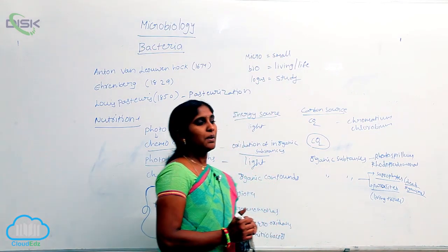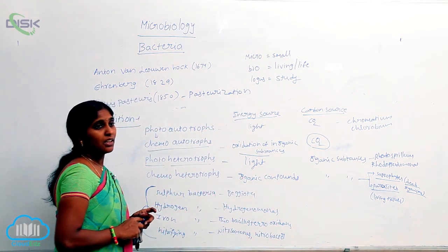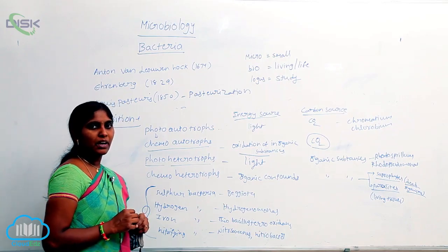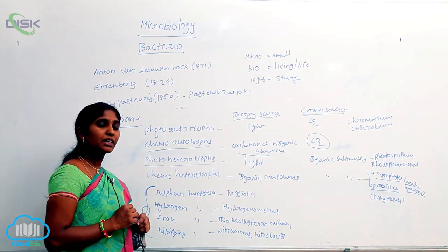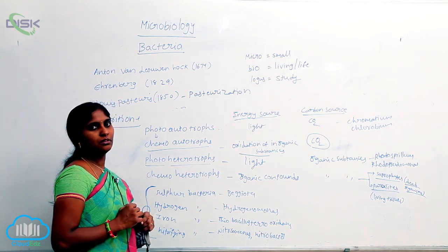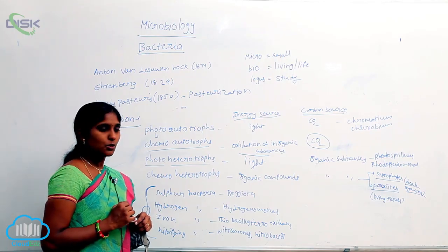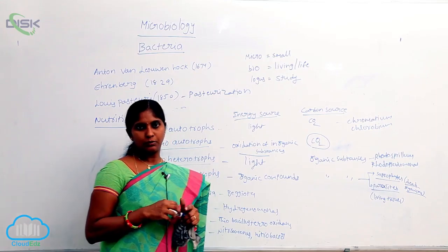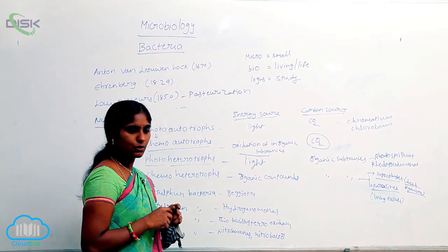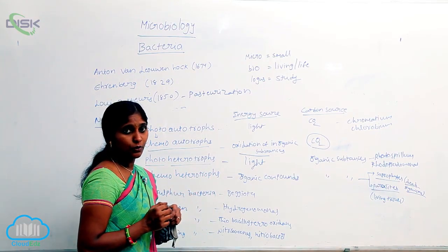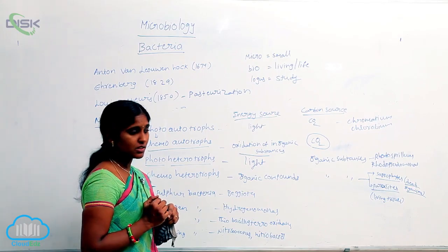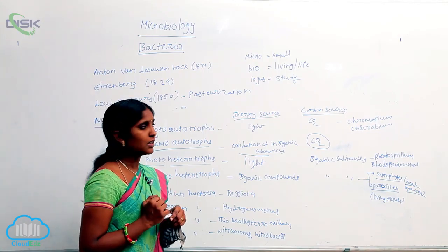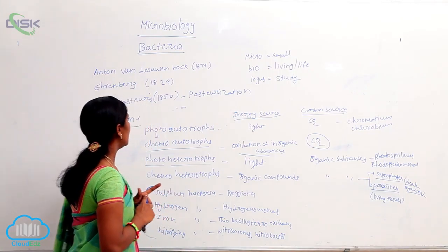An example of a bacterial parasite is Bdellovibrio bacteriovorus. This bacteria is used for the cleaning and purification of Ganges water. So Bdellovibrio bacteriovorus is the best example of a bacterial parasite. According to nutrition, bacteria are divided into four types: photo-autotrophs, chemo-autotrophs, photo-heterotrophs, and chemo-heterotrophs.